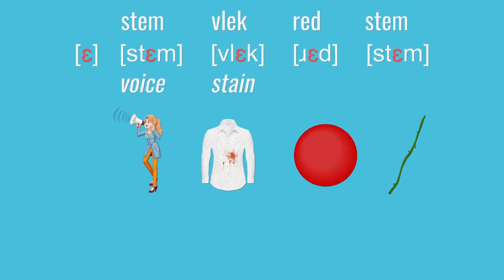We'll start with E. In IPA, E uses this big curly E symbol. It is effectively the same vowel you would use in English words like red and stem, and shows up in Dutch in words like stem and vlek.